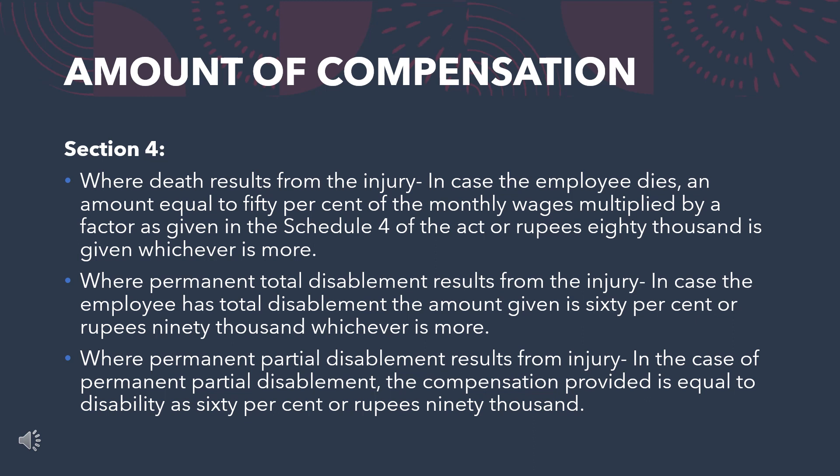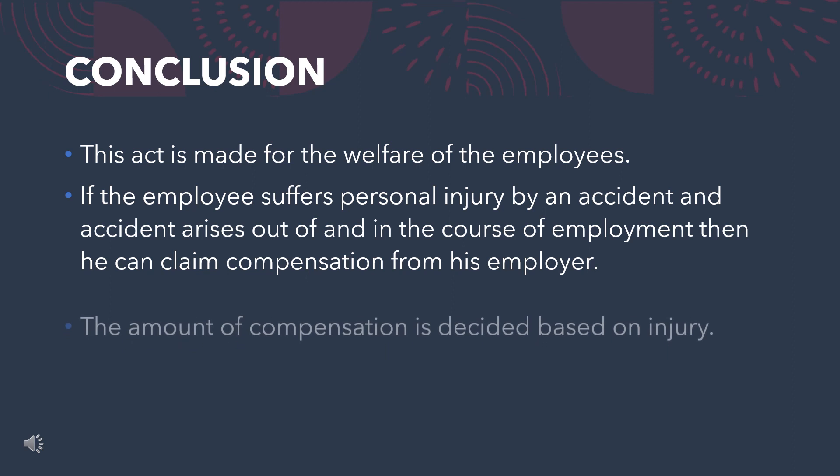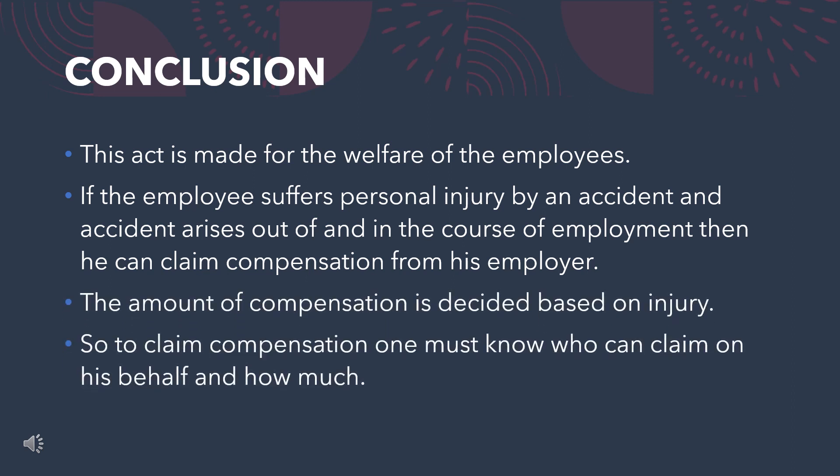Where permanent partial disablement results from injury, the compensation provided is proportional to the disability, calculated as 60% of monthly wages or rupees 90,000, whichever is more. Section 5: this act is made for the welfare of the employees. If the employee suffers personal injury by an accident that arises out of and in the course of employment, then he can claim compensation from his employer. The amount of compensation is decided based on the injury. To claim compensation, one must know who can claim on his behalf and how much.